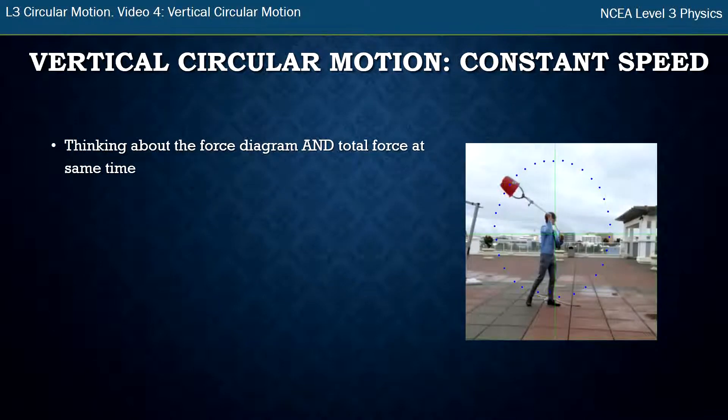So an object that's going around a vertical circle at a constant speed - when I go to draw the force diagrams we really care this year about the forces at the top and the bottom. I'm always thinking of the force diagram and thinking of the total force at the same time in my head and it helps me to get through to the right answer.